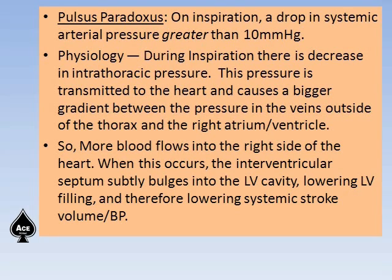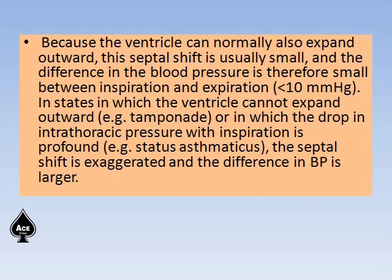Pulsus paradoxus means that on inspiration there is a drop in systemic arterial pressure greater than 10 mmHg. During inspiration there is a decrease in intrathoracic pressure, which is transmitted to the heart and causes a bigger gradient between the pressure in the veins outside the thorax and the right atrium and ventricle, so more blood flows into the right side of the heart. When this occurs, the interventricular septum bulges into the left ventricular cavity, lowering left ventricular filling and therefore lowering the systemic stroke volume and blood pressure. Because the ventricle can normally expand outward, this septal shift is usually small and the difference in blood pressure between inspiration and expiration is less than 10 mmHg.